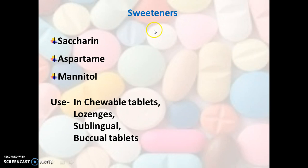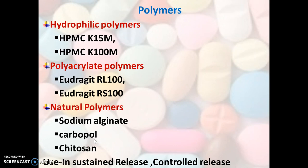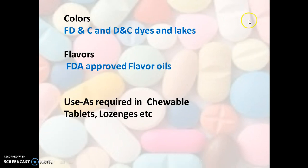Next we have sweeteners, which are used to enhance sweetness and mask bitter taste. Examples are saccharin, aspartame, and mannitol, widely used in chewable tablets, lozenges, sublingual, and buccal tablets. Then we have polymers — special categories include hydrophilic polymers, polyacrylate polymers, and natural polymers. Examples of hydrophilic polymers are HPMC; polyacrylate polymers include Eudragit; and natural polymers include sodium alginate, carbopol, and chitosan. These are widely used for sustained release and controlled release formulations.